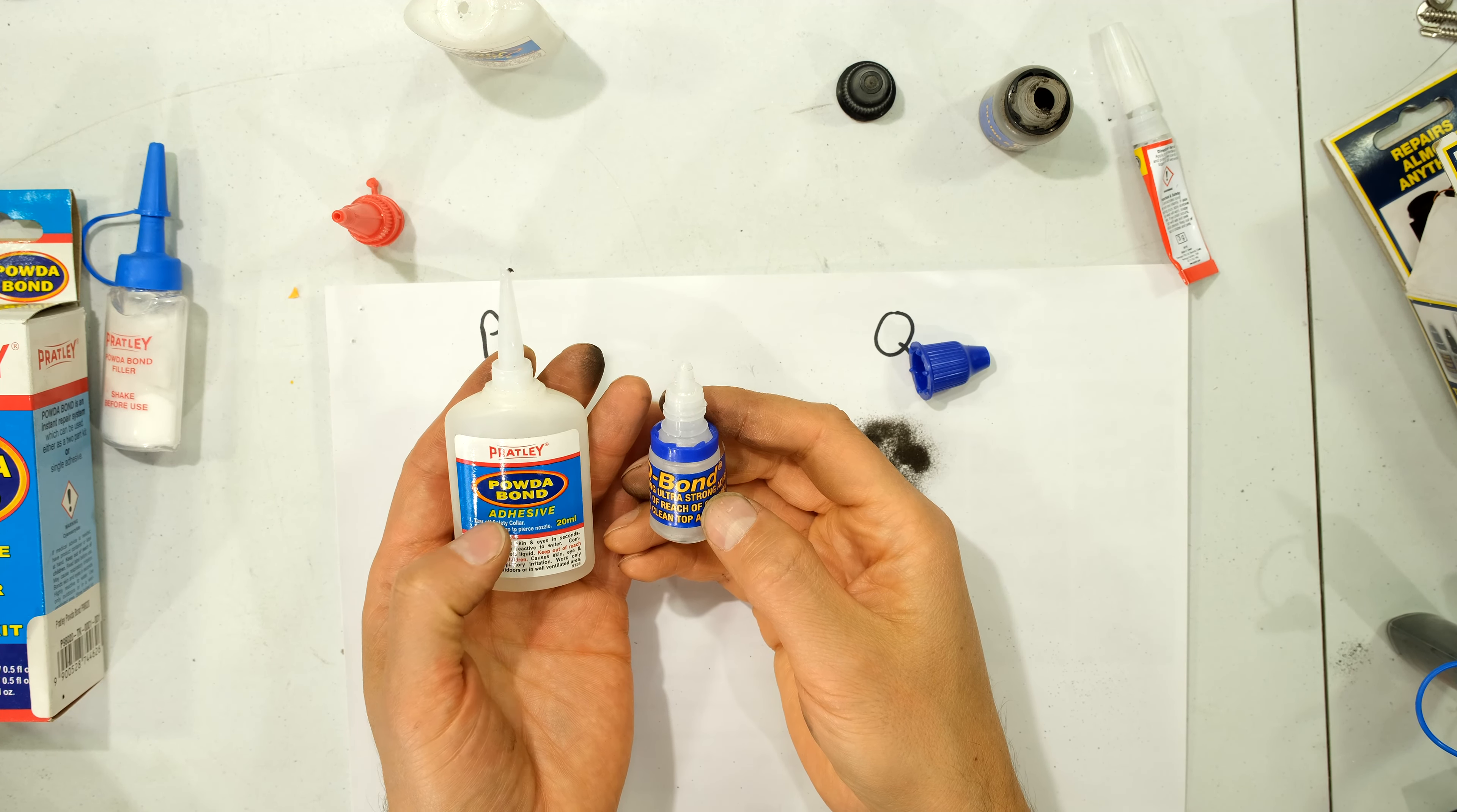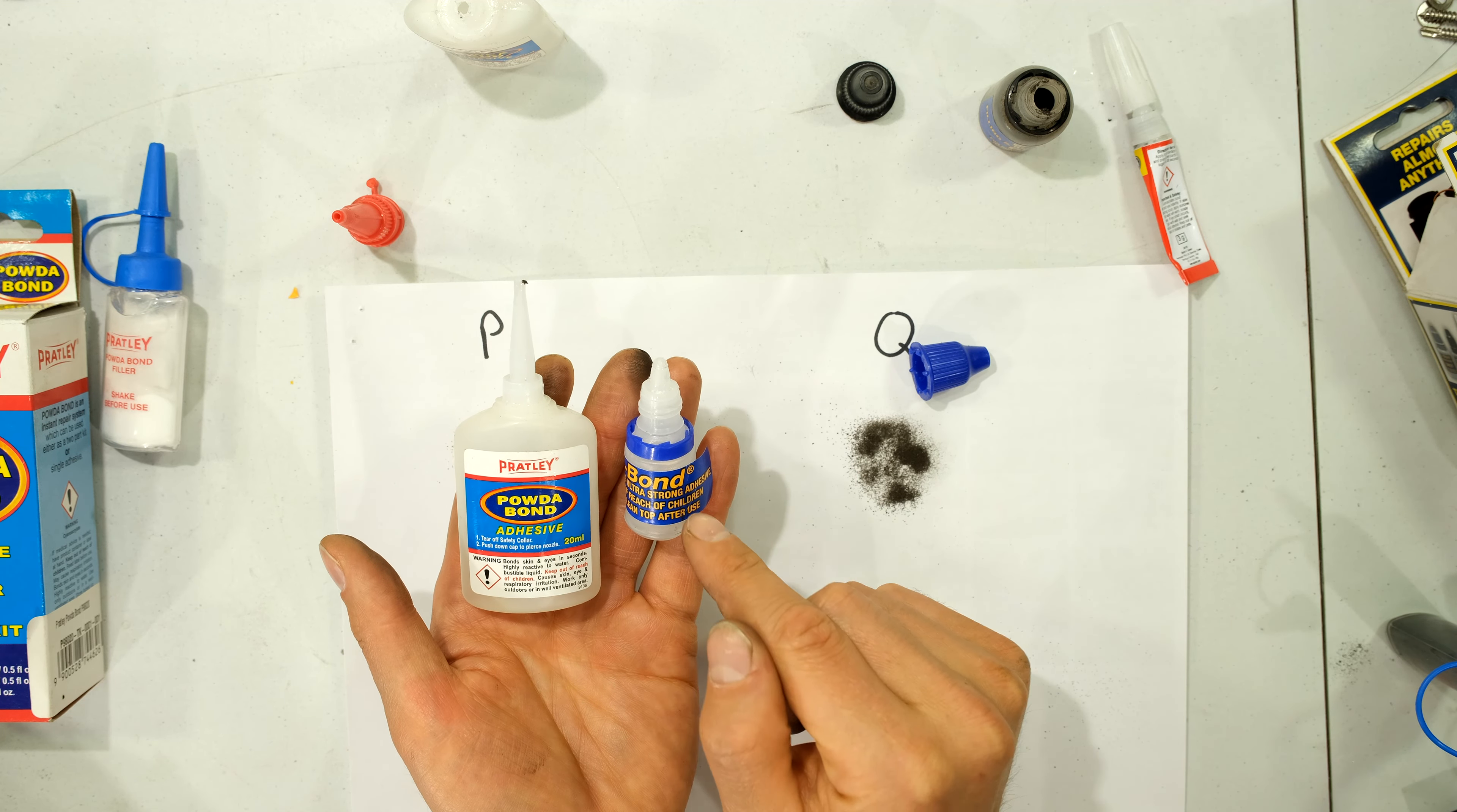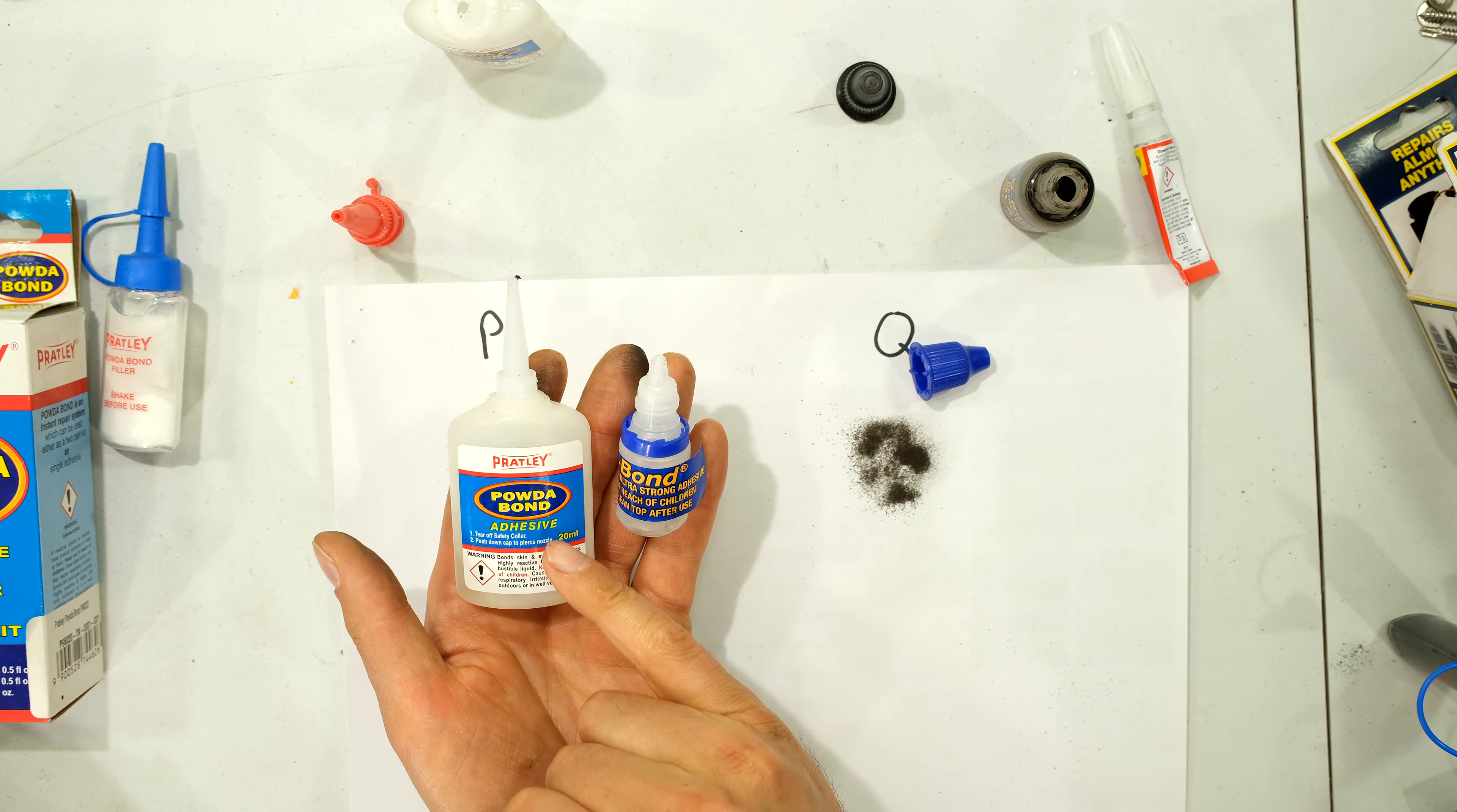So those are some of the reasons why I use the Pratley. And then the reason I use the Q Bond is when I do finer work. For the powder bond option rather than the Q Bond. In fact sometimes I even use the Q Bond filings for fine work. But just use the Pratley adhesive.